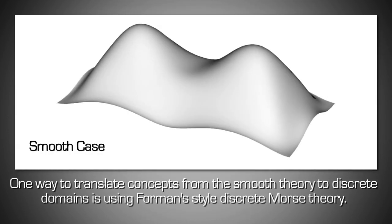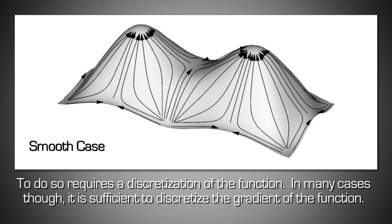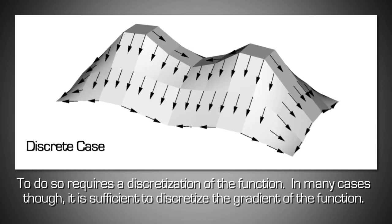One way to translate concepts from the smooth theory to discrete domains is using Forman-style discrete Morse theory. To do so requires a discretization of the function. In many cases, though, it is sufficient to discretize the gradient of the function.